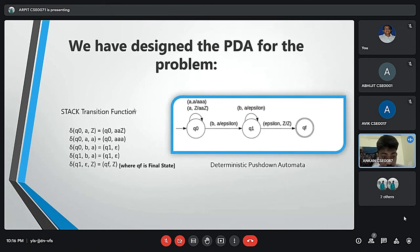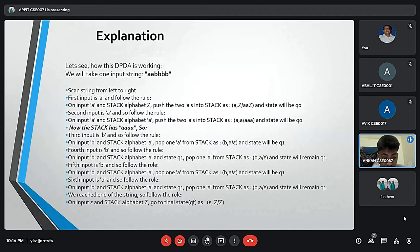Here is an example as per the diagram. Here we find that this is the deterministic pushdown automata. QF is the final state.